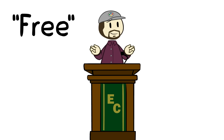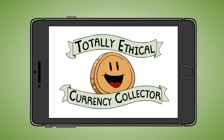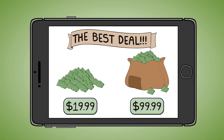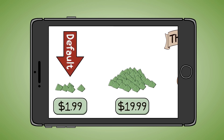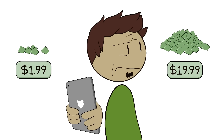Then, of course, there's free-to-play games. You knew this was coming. Because every game that sells you currency has both the steak and the lobster on the menu, right? And even though those are framed as THE BEST DEAL, you'll notice they often have a default deal too.